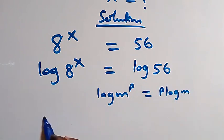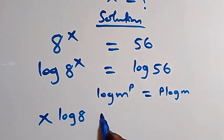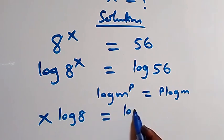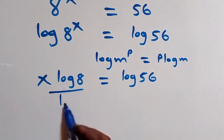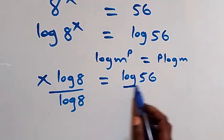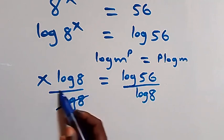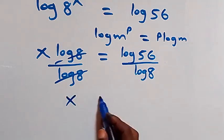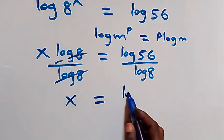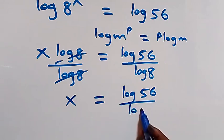What we have here becomes x·log 8 equals log 56. From here we divide both sides by log 8 — log 8 cancels — and we have x equals log 56 over log 8.